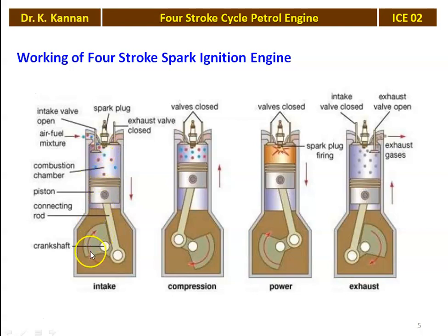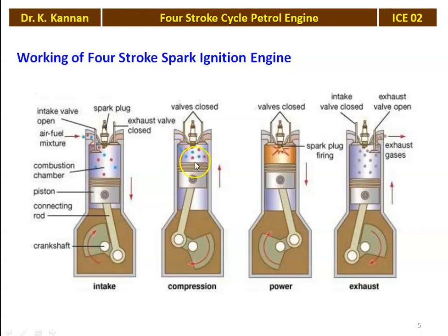In the compression stroke, look at the valve position — both valves are closed and the piston is moving upward from the bottom dead center to the top dead center, and the air-fuel mixture is getting compressed. At the end of the compression stroke, a spark is produced. Using the spark, combustion of the fuel takes place and the gases are expanding.